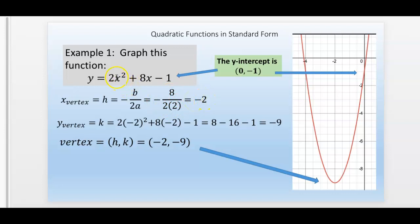Then take the negative two and plug it in here where the x is, which is what I did right here. Two times x², so that's negative two squared.